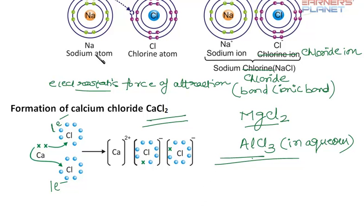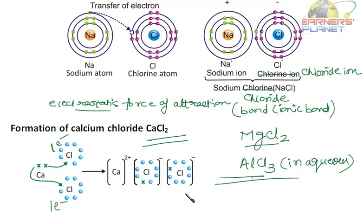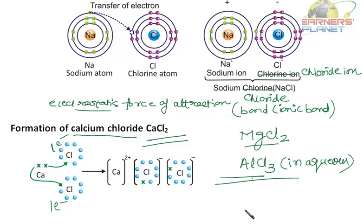So this is how ionic compounds are formed. Now we need to discuss the technique for writing the formulae of chemical compounds. We write CaCl2 for calcium chloride, NaCl for sodium chloride, MgCl2 for magnesium chloride, and AlCl3 for aluminium chloride. A chemical formula represents the composition of a molecule of a substance in terms of the symbols of elements present in it.